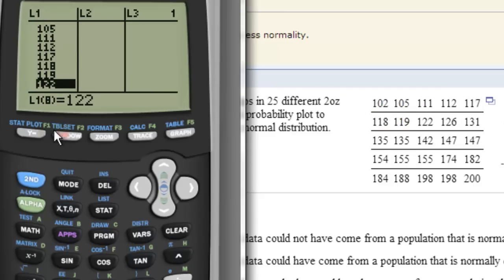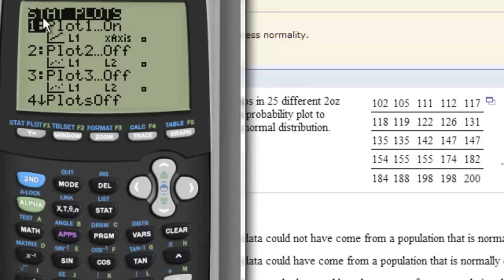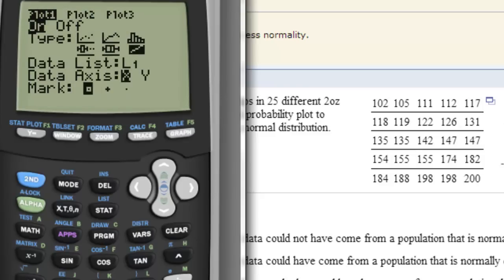then what we do is we go to the STAT plot. So I go second STAT plot and make sure this plot stat is on by hitting enter. Make sure I hit enter again to turn it on. And then I choose the statistical plot which is this right hand corner there.